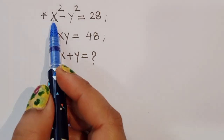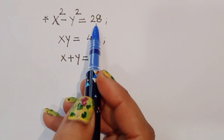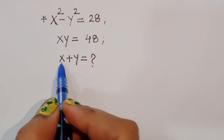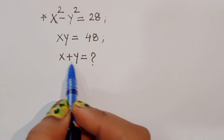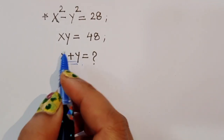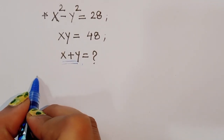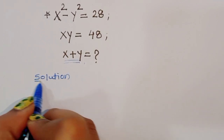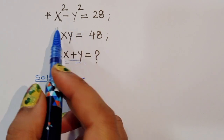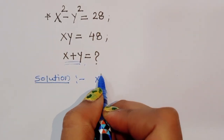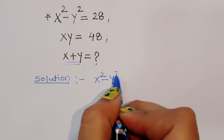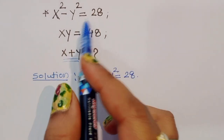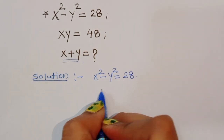The question is: given x squared minus y squared equals 28 and xy equals 48, we have to find out the value of x plus y. Let's see the solution. What is given: x squared minus y squared equals 28 and xy equals 48.